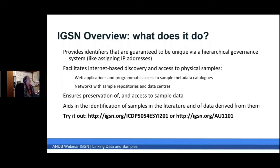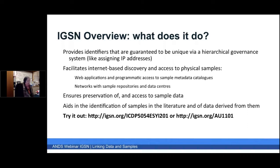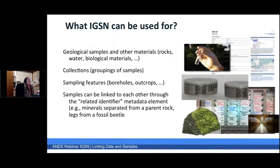Here are all the different names for a highly valuable sample from a cruise in the Pacific. As we move towards data aggregations, we really need to uniquely identify samples, analytical data, and publications derived from them. What the IGSN does is provide precision identifiers that are guaranteed to be unique by a hierarchical system. It facilitates internet-based discovery and access to physical samples, provides web applications and programmatic access to sample metadata catalogues, and helps networks with sample repositories and data centres. It ensures preservation of and access to sample data, aids in the identification of samples in the literature, and enables clickable links to sample data. IGSN stands for International GeoSample Number, but it is increasingly used for water, biological materials, and all sorts of things, including collections and sample features such as a borehole or outcrop.